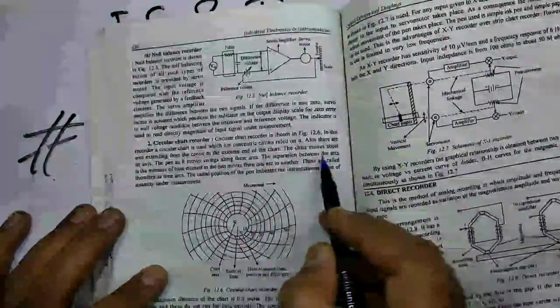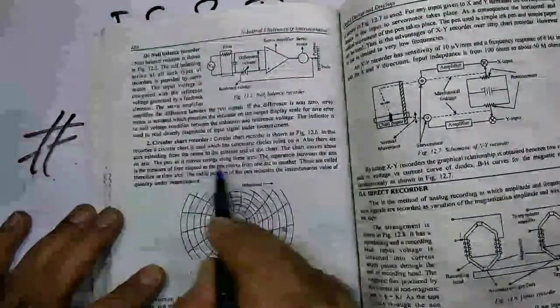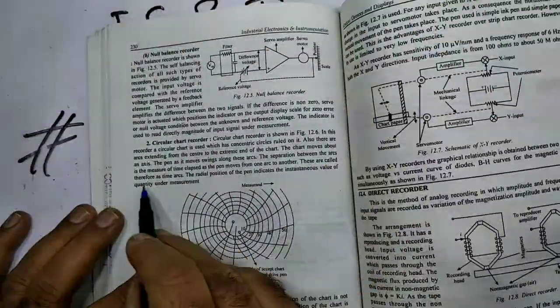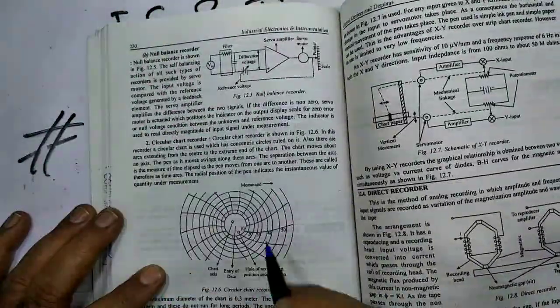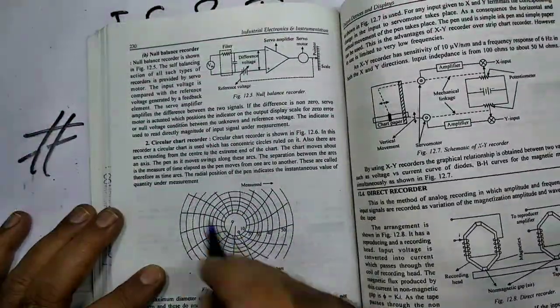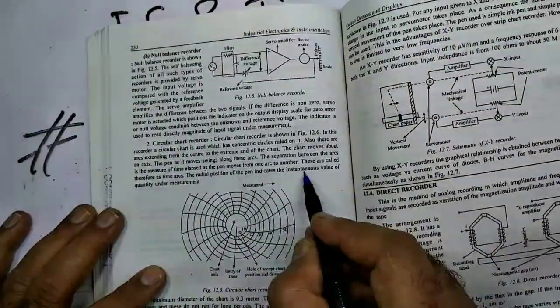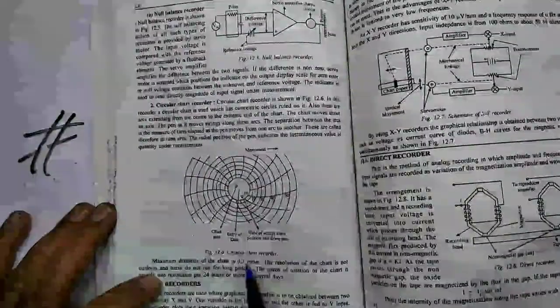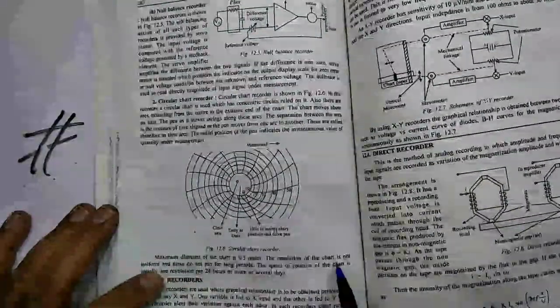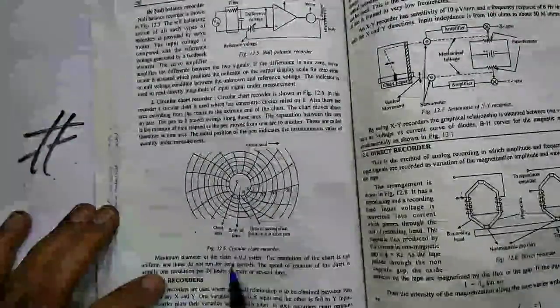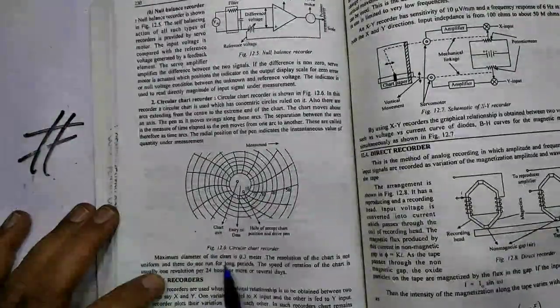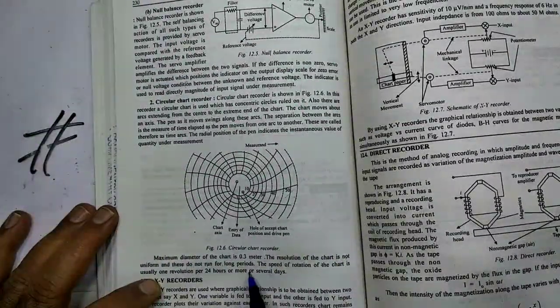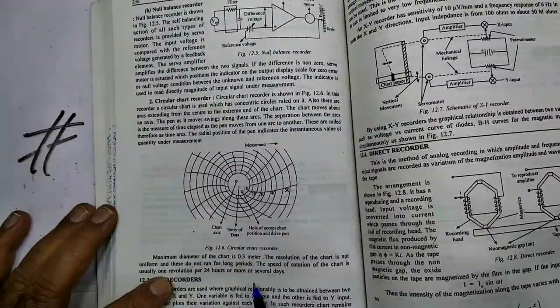The separation between the arcs is measure of the time elapsed as pen moves from one arc to the another. These are called therefore as time arcs. The radial position of the pen indicates the instantaneous value of the quantity under measurement. Maximum diameter of the chart is 0.3 meter. The resolution of the chart is not uniform. These do not run for long periods. The speed of rotation of the chart is usually one revolution per 24 hours or more or several days.